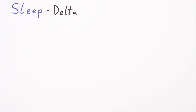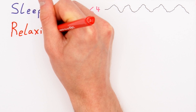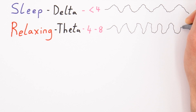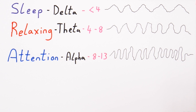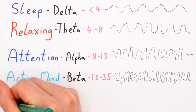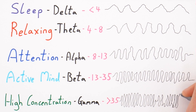Sleep produces delta waves, which have a frequency of up to 4 Hertz. Deep relaxation produces theta waves, which fall between 4 and 8 Hertz. Passive attention creates alpha waves, which are between 8 and 13 Hertz. An active mind shows beta waves, which are 13 to 35 Hertz. And high concentration or problem solving can produce gamma waves above 35 Hertz. So hopefully watching this video, you're producing some gamma waves — hopefully not delta waves.